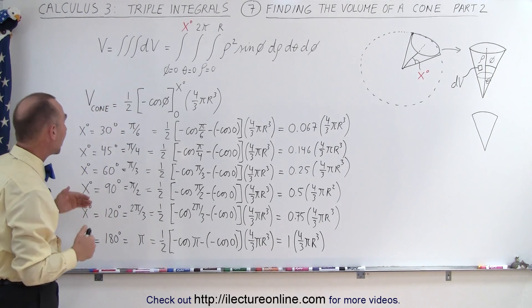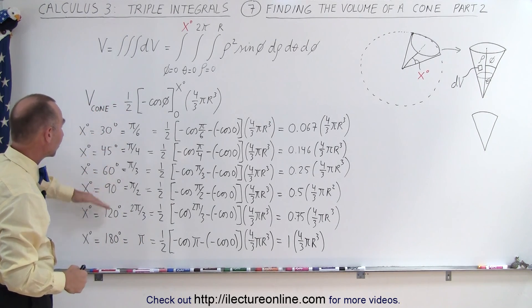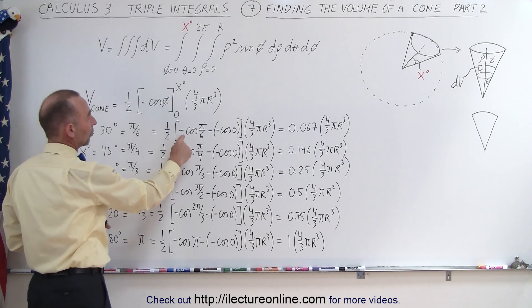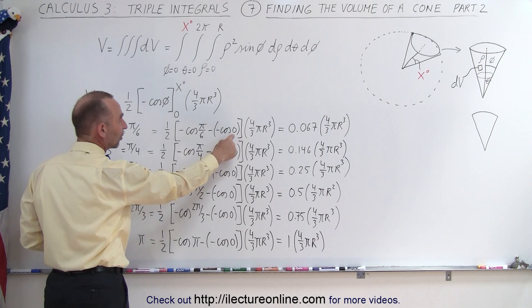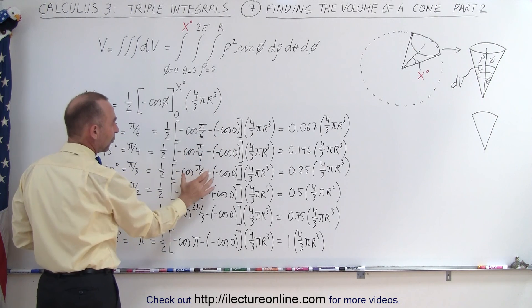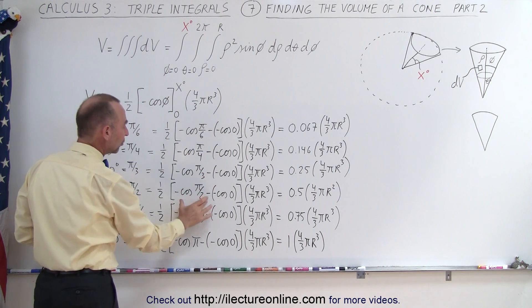So when we do that for each case—for 30, 45, 60 and so forth degrees—we get the following. So we get minus the cosine of pi over six minus minus the cosine of zero, or the cosine of pi over four, pi over three, pi over two and so forth.